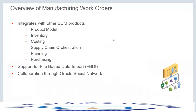Manufacturing Cloud, as you know, is integrated with many applications: your product model, where we get item and structure details; inventory, where we get on-hand, lot, serial, and reservation details; costing, where after performing transactions in Manufacturing Cloud you transfer all transactions to costing; supply chain orchestration, for automated work order creation from planning, order management, or inventory min-max; and purchasing for OSP and contract manufacturing scenarios.